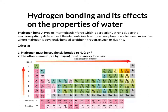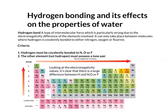If we look at this periodic table where it's got the electronegativity trends, you can see quite clearly that the difference in electronegativity between hydrogen and nitrogen, oxygen, and fluorine is quite high. So with hydrogen having an electronegativity value of 2.2, nitrogen having 3.04, oxygen 3.44, and fluorine 3.98, you can see where the basis of hydrogen bonding comes from.